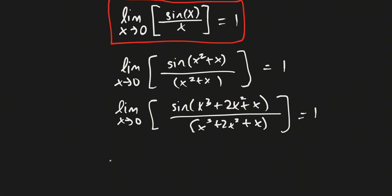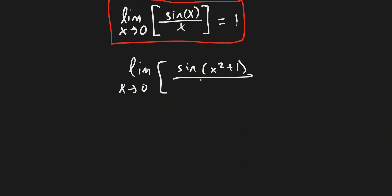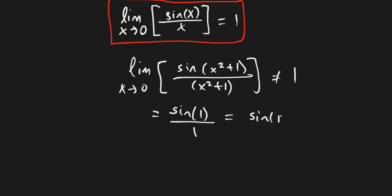When is this not going to be true? This is not going to be true when we have a term that does not have x in it. So if we have something like sine of x squared plus 1 over x squared plus 1, this is not going to be equal to 1. We don't even need this property here — we can use direct substitution. This just equals sine of 1 over 1, which is sine of 1, and that is not equal to 1.